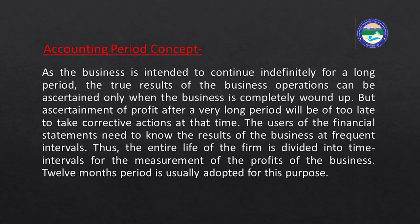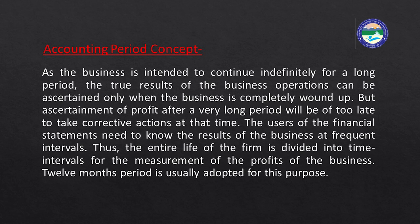The next is the accounting period concept. As the business is intended to continue indefinitely, the true results of business operations can only be ascertained when the business is completely wound up. However, ascertainment of profit or loss after a long period will be too late to take corrective actions. Users of financial statements need to know results at frequent intervals, so the entire life of the firm is divided into time intervals. A 12-month period is usually adopted, starting from 1st April to 31st March.